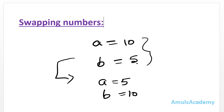We can do this by two methods. One is using a third variable, and the second way is without using a third variable — in that we will add and subtract the values to swap the numbers.